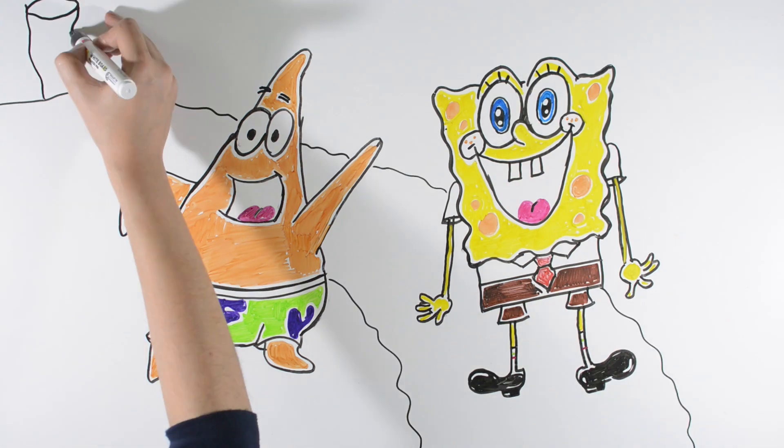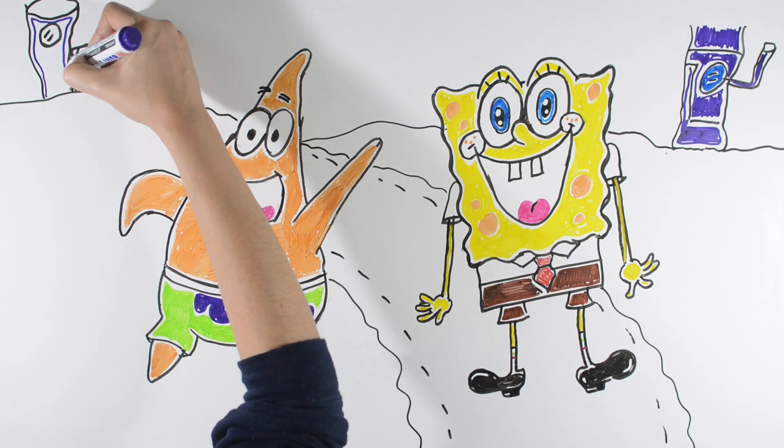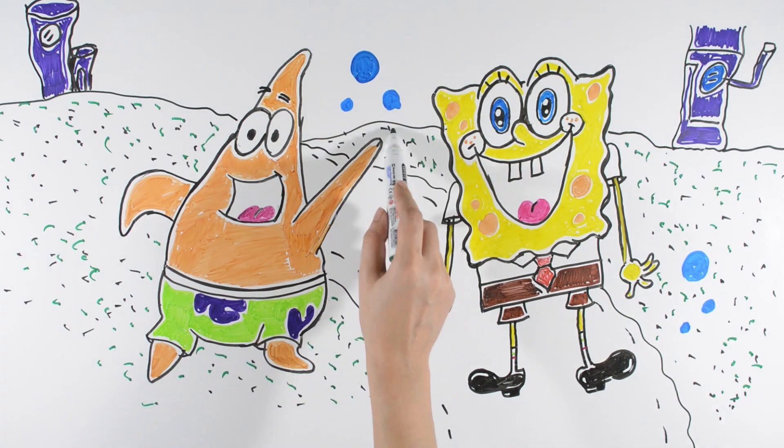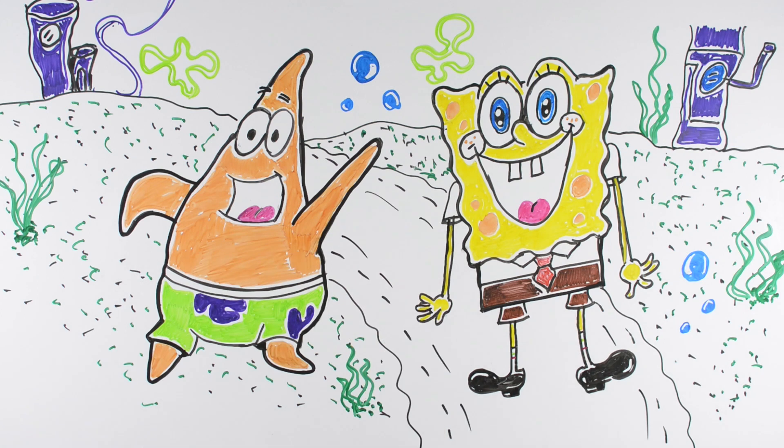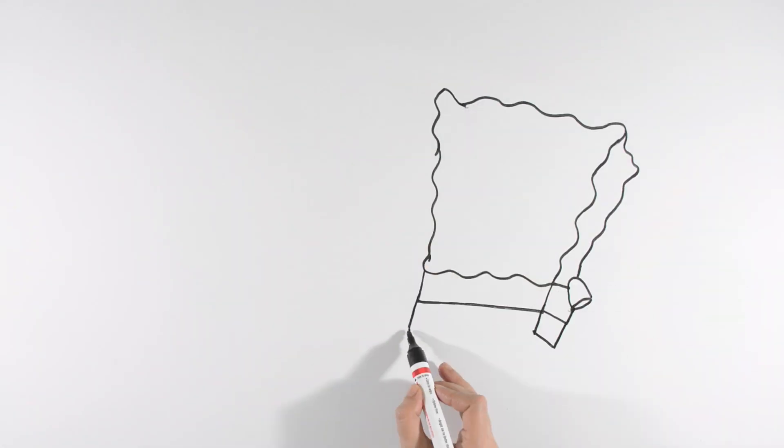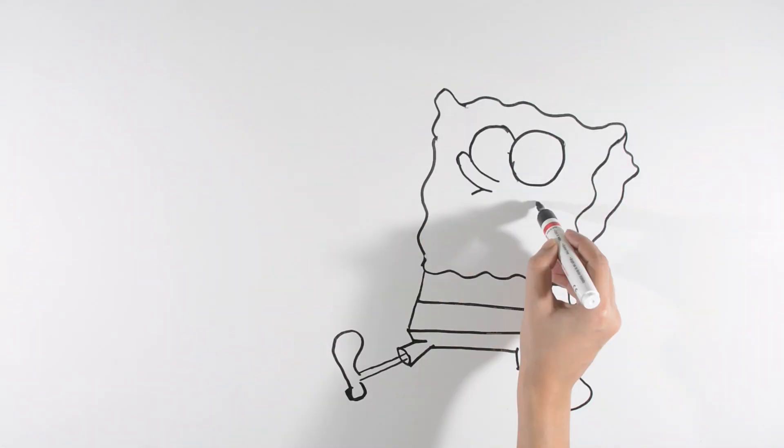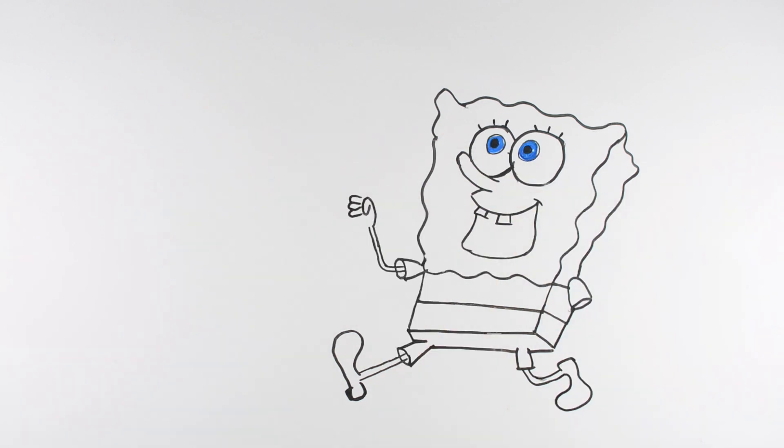SpongeBob SquarePants has won a variety of awards, including six Annie Awards, eight Golden Reel Awards, four Emmy Awards, 16 Kids' Choice Awards, and two BAFTA Children's Awards. In 2011, a newly described species of fungus, Spongiforma squarepantsii, was even named after the cartoon's title character.